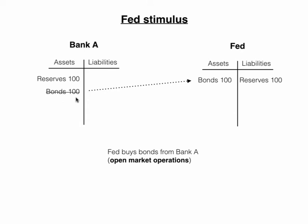If the Fed wants to increase the money supply, it's going to be buying bonds from banks. These banks are just holding some bonds as assets, and the Fed is going to buy some of them at whatever the market price is. The Fed buys up these bonds, which are now going to be on the Fed's balance sheet. In exchange for that, the Fed is going to give the bank some reserves — just creating some reserves in an account with the Fed.